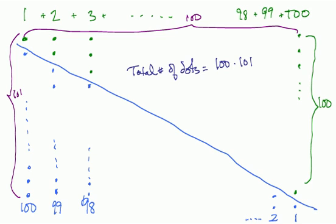However, notice we're taking the sum we're interested in, 1 plus 2 plus 3, all the way up to 100, and we've got it twice here. So the sum, 1 plus 2 plus 3 up to 100, is that 100 times 101 divided by 2. So that's 50 times 101, which is 5050. And that's how Gauss did it.